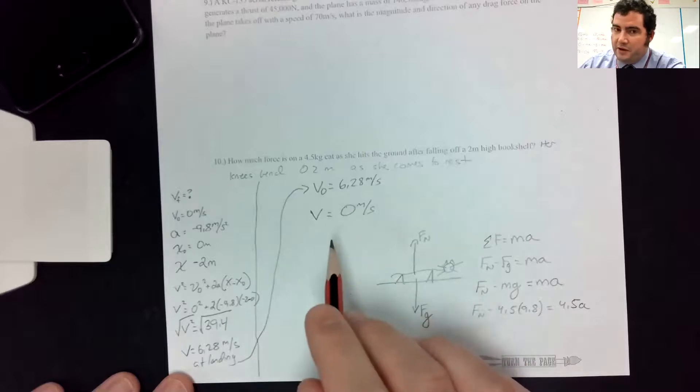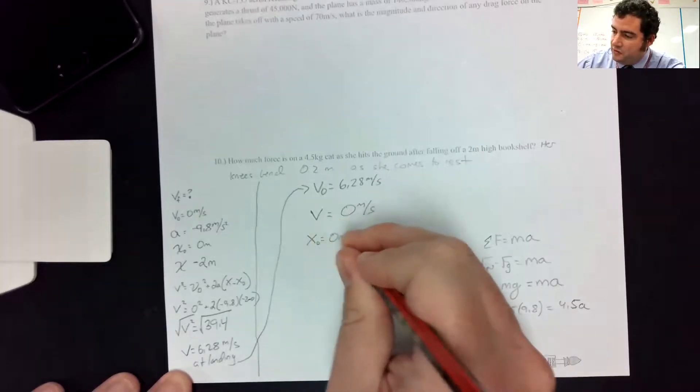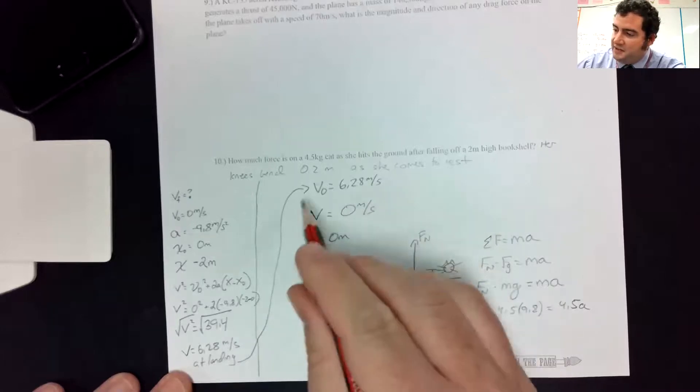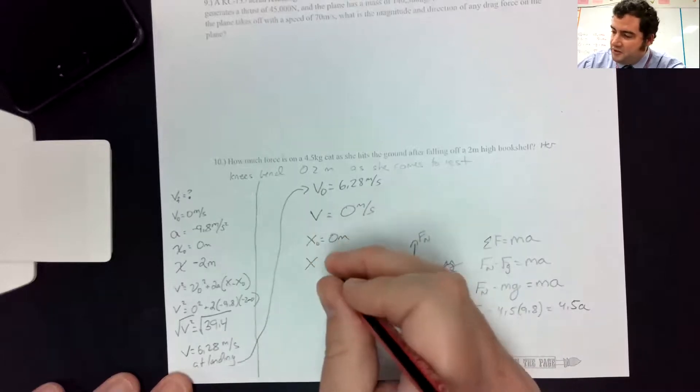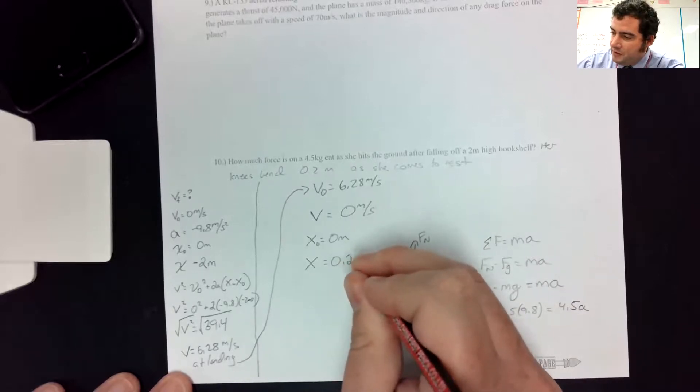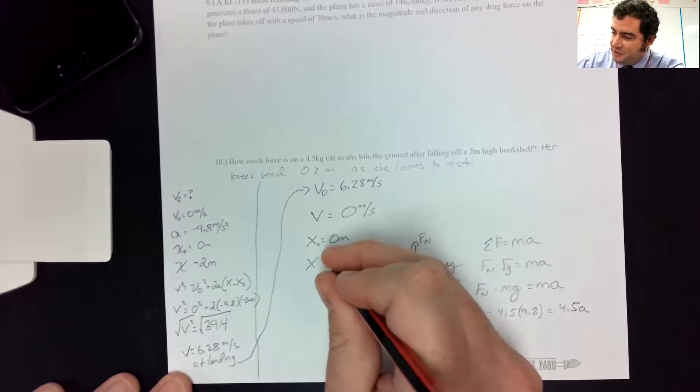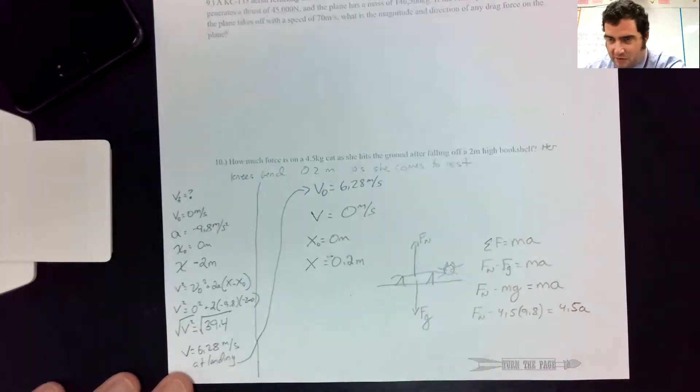So I've got V and V0. X0 is usually 0. And X, it says she's bending her knees 0.2 meters as she's coming to rest. And that's 0.2 meters in the negative direction because she's continuing to move down.